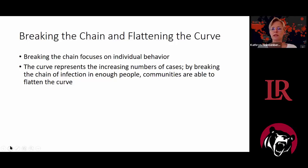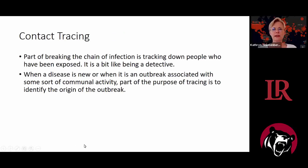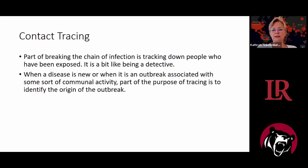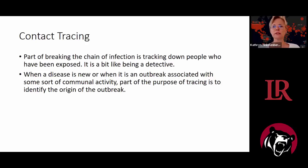Breaking the chain focuses on individual behavior — the things we do to flatten the curve. When we start to have an outbreak, one of the things we do is contact tracing. Part of breaking the chain of infection is tracking down people who have been exposed. When a disease is new, the tracing helps identify the origin of the outbreak. With COVID-19, we are tracking down all people who might have come into contact with someone who is sick.